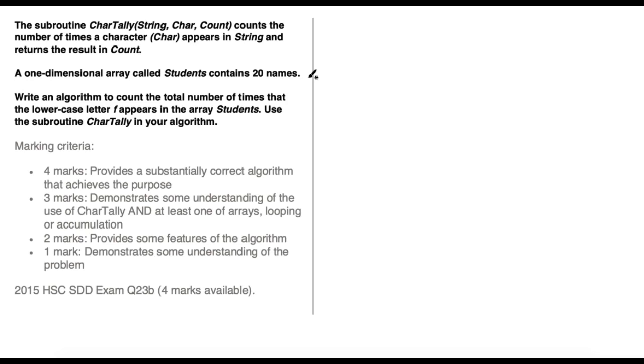So not only do we need to count how many times the lowercase letter f appears in a student's name, but we need to do that for all 20 students in this array. We need to use this char tally subroutine and that means that we're going to have to use that subroutine 20 times, once for each student, once for each student's name.